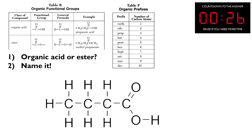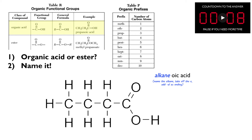Let's try this problem — organic acid or ester, then name it. We have an organic acid here because the oxygen at the end is bonded to a hydrogen, not another carbon. When I have an organic acid, it's simple to name: I just count my carbons. I count four carbons, so this would be butane. I take off the E and name it butanoic acid.